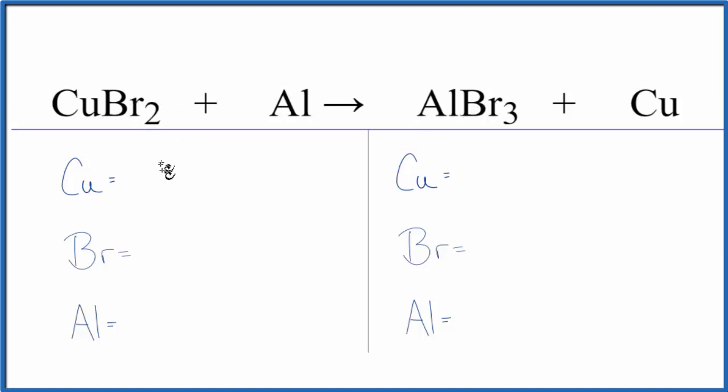So to balance the equation, we'll just count the atoms up first. One copper, two bromine atoms, and one aluminum atom. Product side, we have one copper here, three bromines, and one aluminum.